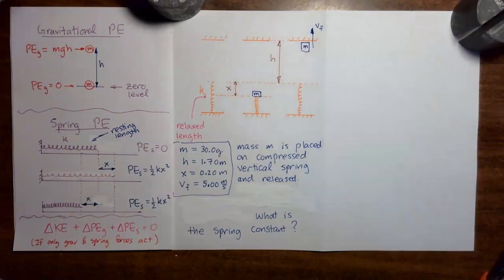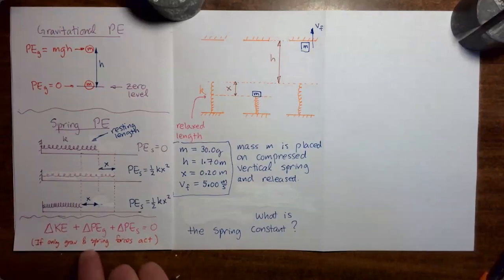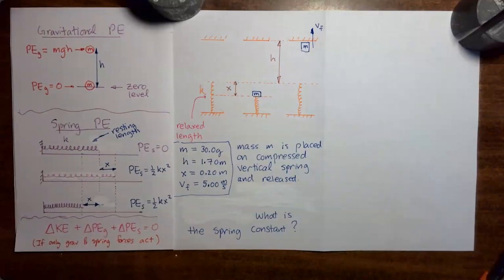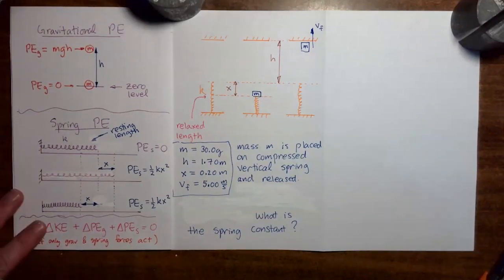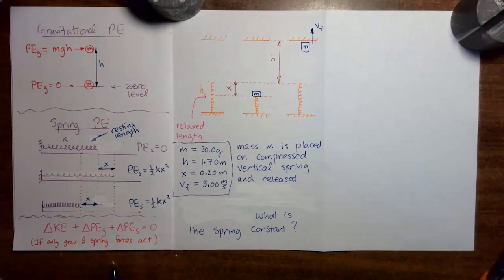So for this class, we can express conservation of mechanical energy by saying that change in kinetic energy plus change in gravitational potential energy plus change in spring potential energy is equal to zero. In this video, we're going to do an example problem involving both gravitational potential energy and spring potential energy.